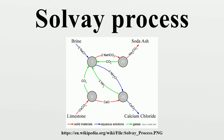The Solvay process, or ammonia-soda process, is the major industrial process for the production of sodium carbonate. The ammonia-soda process was developed into its modern form by Ernest Solvay during the 1860s. The ingredients are readily available and inexpensive: salt, brine, and limestone. The worldwide production of soda ash in 2005 was estimated at 42 billion kilograms — more than 6 kilograms per year for each person on Earth. Solvay-based chemical plants now produce roughly three-quarters of this supply, with the remainder being mined from natural deposits.